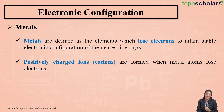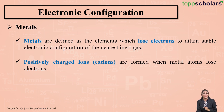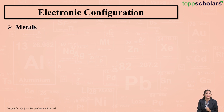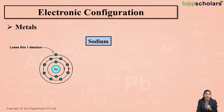So metals, in order to become stable, lose electrons and on losing electrons they form positively charged ions, that is cations. Now if I talk about sodium, the atomic number of sodium is 11, so its electronic configuration is 2, 8, 1.